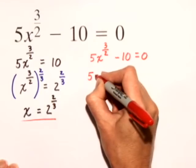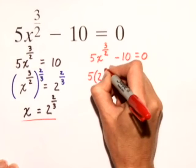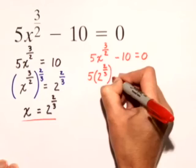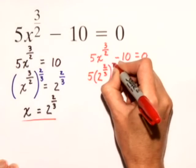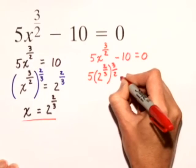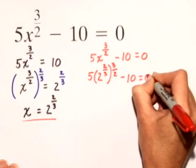We'll have 5 times 2 to the 2 thirds, that's x, raised to the 3 halves minus 10 equals 0.